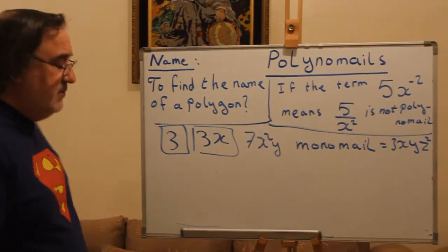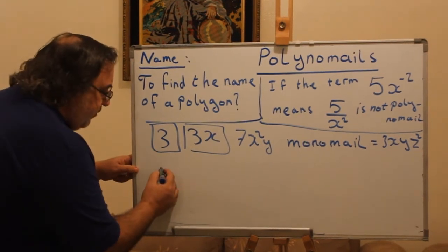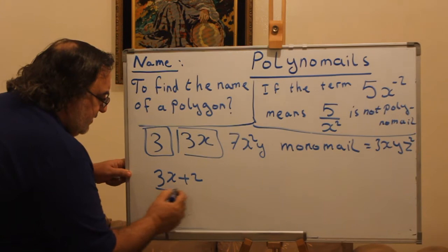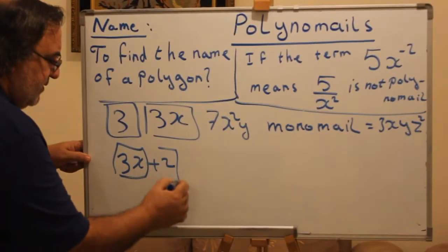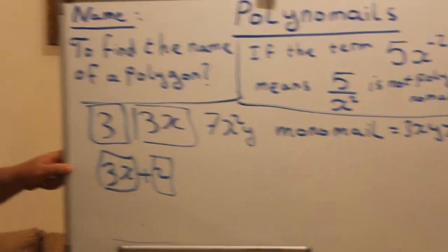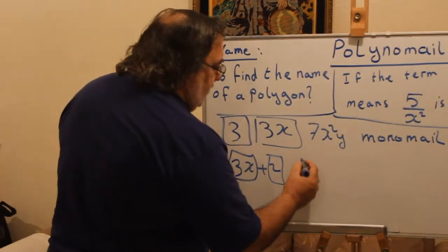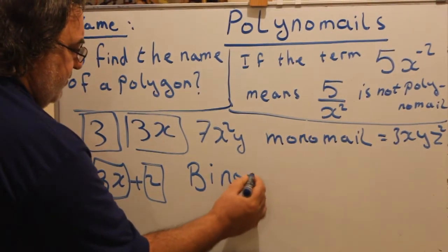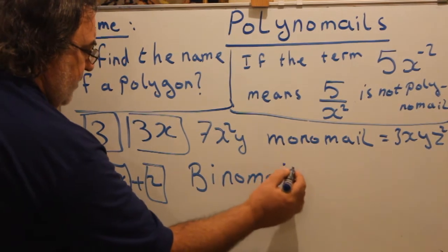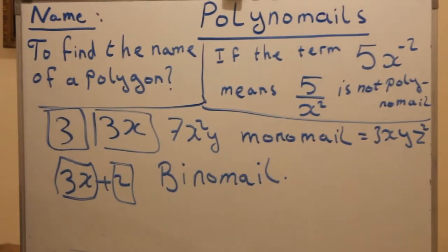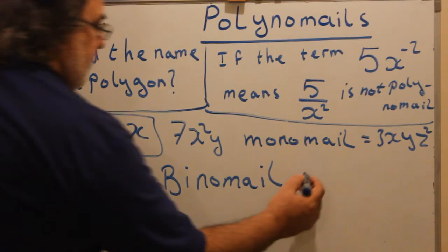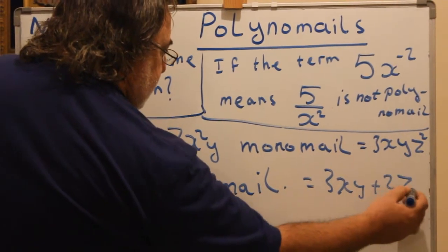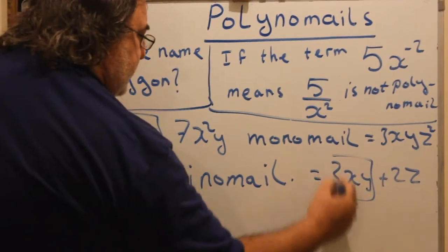Now, if you have two terms — let's say 3x plus 2. This is one term and this is another term — two terms. We call it binomial. Another example: 3xy plus 2z. This is two terms.